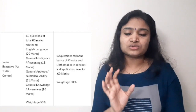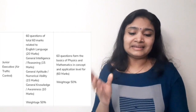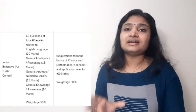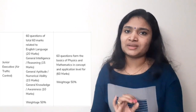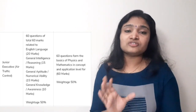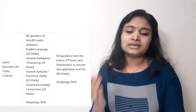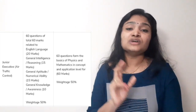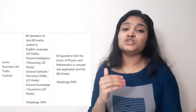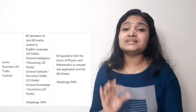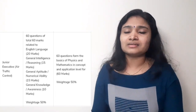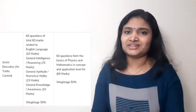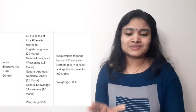Let us see Part A first — the general section consists of: English subject, General Intelligence and Reasoning, General Aptitude and Numerical Ability, and General Knowledge and Current Affairs. The marks distribution is: English — 20 marks, General Intelligence and Reasoning — 15 marks, General Aptitude and Numerical Ability — 15 marks, General Knowledge and Current Affairs — 10 marks. Totally 60 marks for Part A, and it is given 50% weightage.